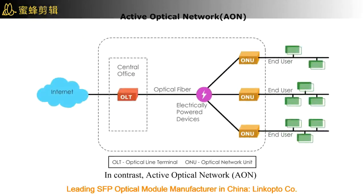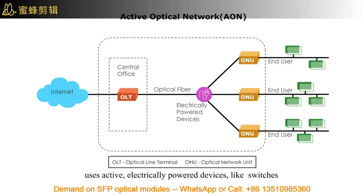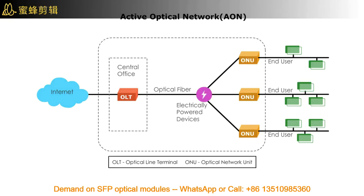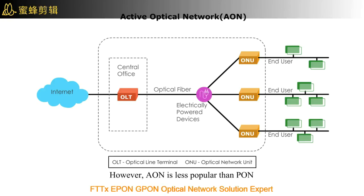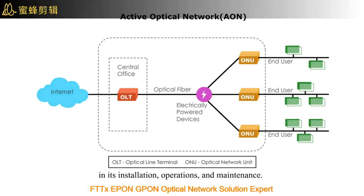In contrast, Active Optical Network, or AON, uses active, electrically powered devices such as switches to direct the signal to end-users. AON has some advantages, such as covering a longer range than PON and serving fewer end-users per unit. However, AON is less popular than PON because AON is less cost-effective and more complex in terms of installation, operations, and maintenance.